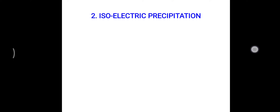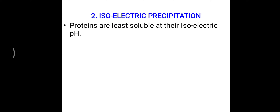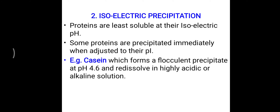The second method is isoelectric precipitation. At the isoelectric point, the net charge is zero and the protein will be precipitated. Proteins are least soluble at their isoelectric pH, and some proteins precipitate immediately when adjusted to their isoelectric point. For example, casein, which is present in milk, forms a flocculent precipitate at pH 4.6, which is an acidic pH, and re-dissolves in highly acidic or alkaline solution.